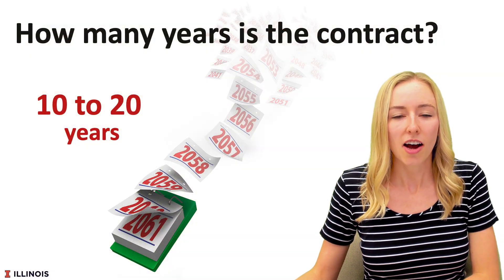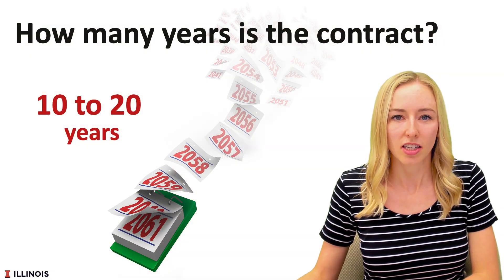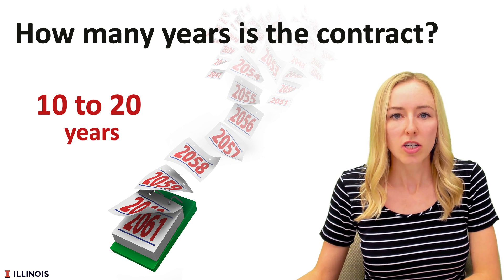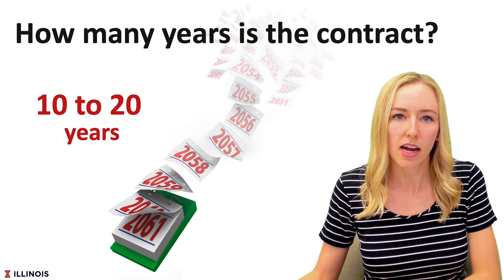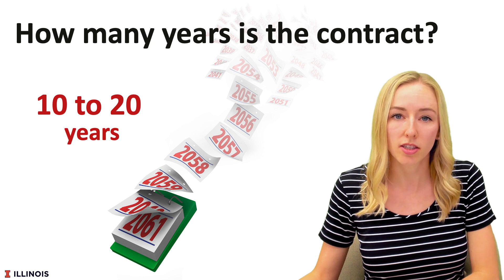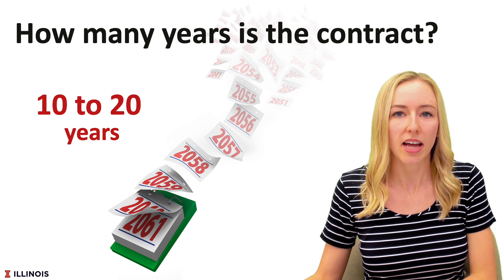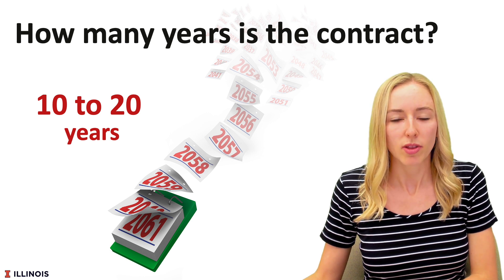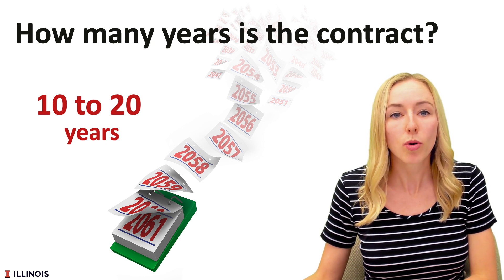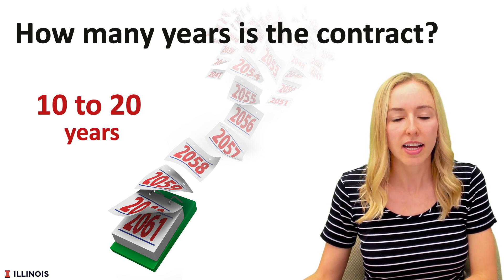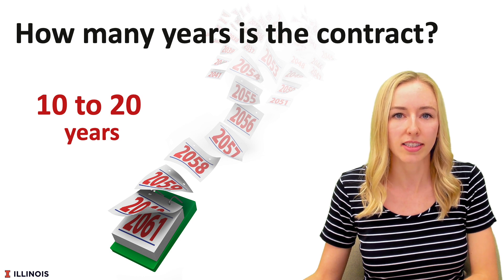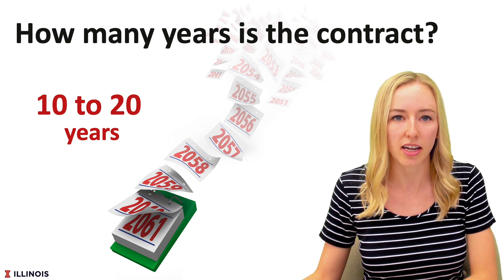Another question to consider is how long am I locked into a contract for? Carbon contracts typically last for a number of years because it takes time to store carbon in the soil and make sure it stays there. Typically, you see contracts between 10 and 20 years, but many things can change within that time period. It is important to clearly understand any penalties for violating the contract and any liabilities the farmer has if the land changes hands.